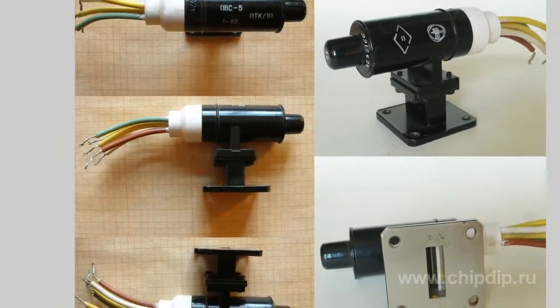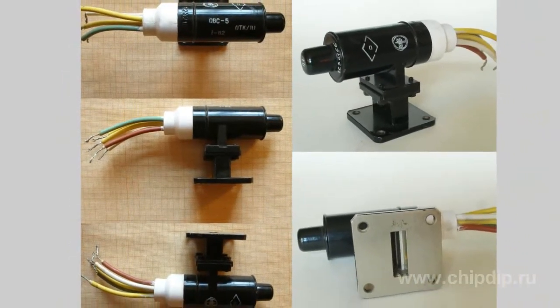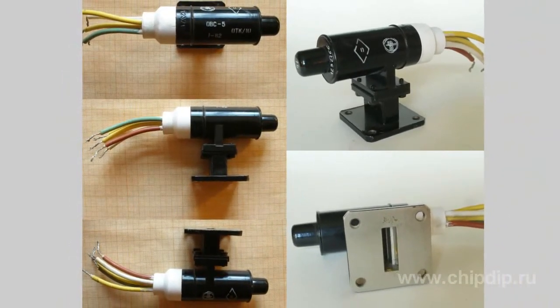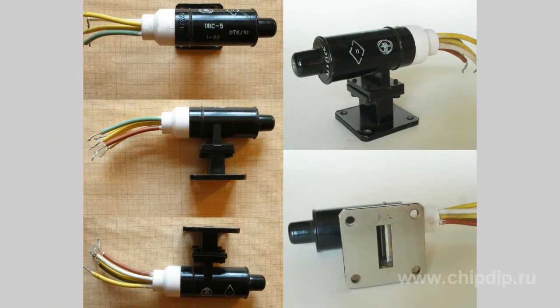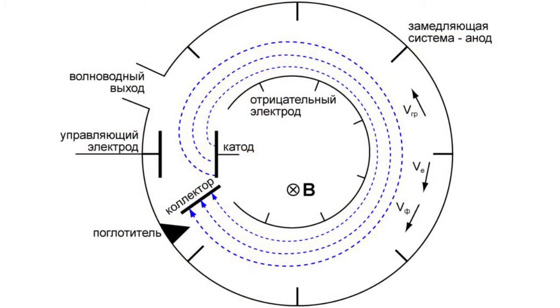On the contrary, in M-type tubes — M as in magnetron — the kinetic energy of electrons is not changed, but the potential energy is. It is converted to the energy of the microwave field. In the M-type tube, the most favorable interaction of the electron flow and microwave field occurs at the moment of exact equality of the average velocity of electrons and the phase velocity of the wave.